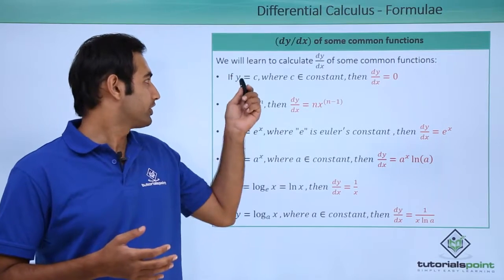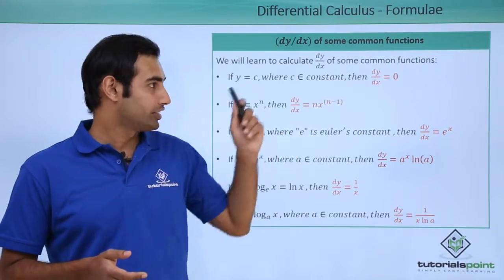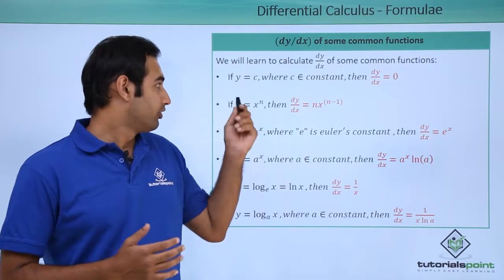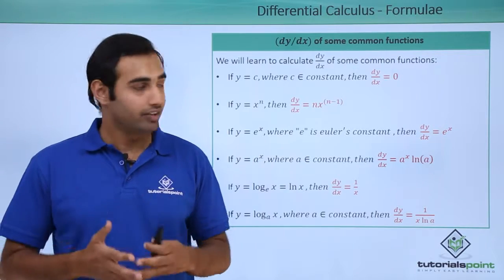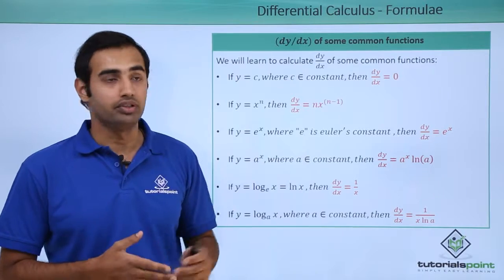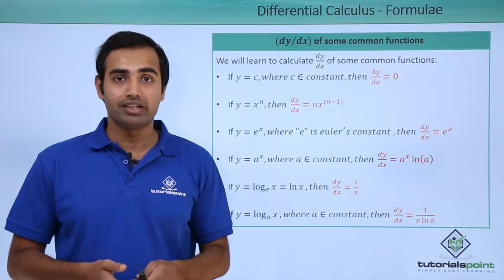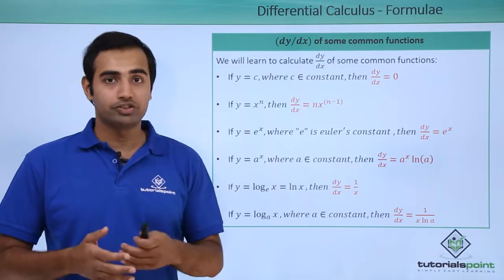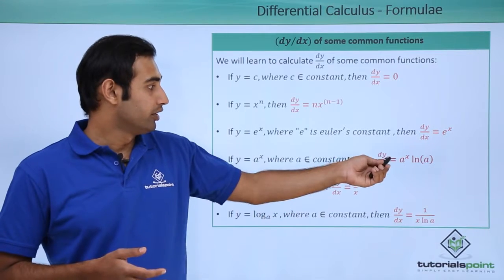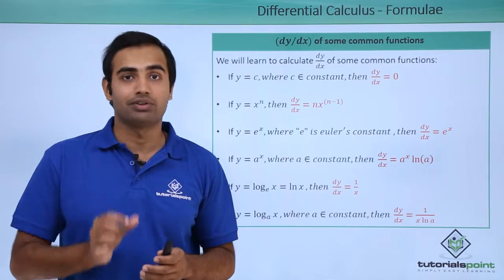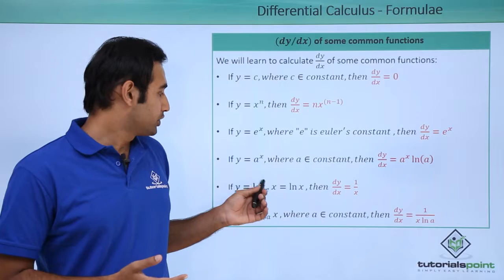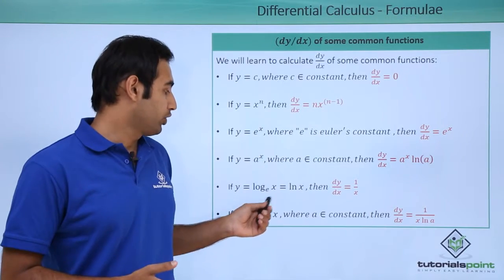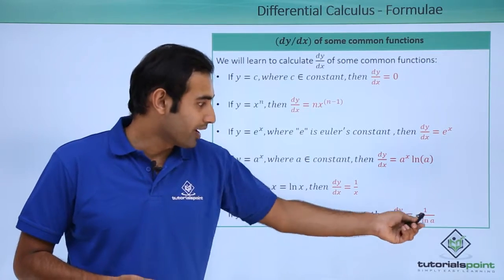Here are the standard derivative formulae. For y = c (a constant), dy/dx = 0 — the derivative of a constant with respect to any variable is 0. For a polynomial y = x^n, dy/dx = n·x^(n−1). For the exponential y = e^x, dy/dx = e^x. For y = a^x, dy/dx = a^x · ln(a), where ln is the natural logarithm base e. For y = ln(x), dy/dx = 1/x. For y = log_a(x), dy/dx = 1/(x · ln a).